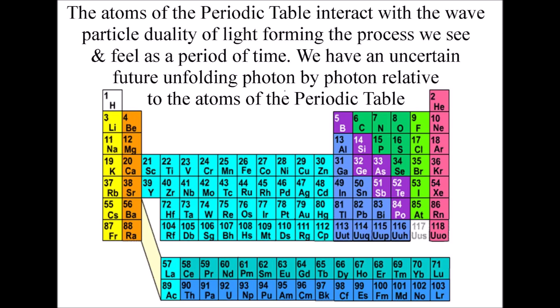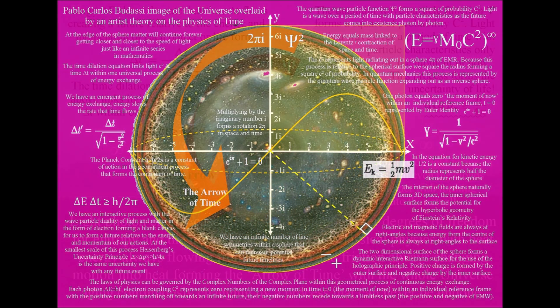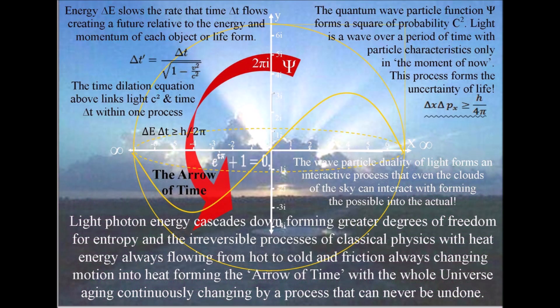Just as we have photon energy levels cascading down from the Big Bang, we also have photon energy levels continuously cascading down from the Sun.